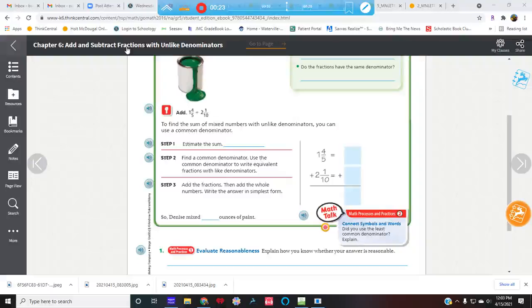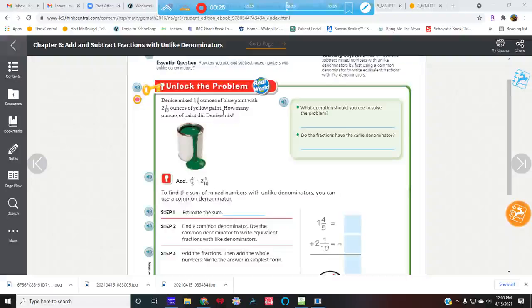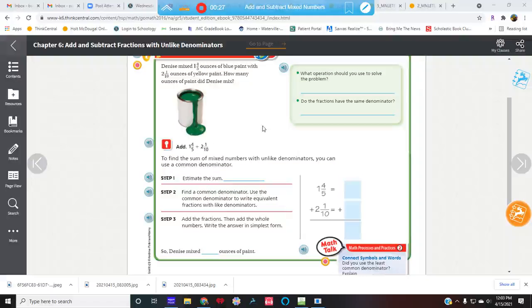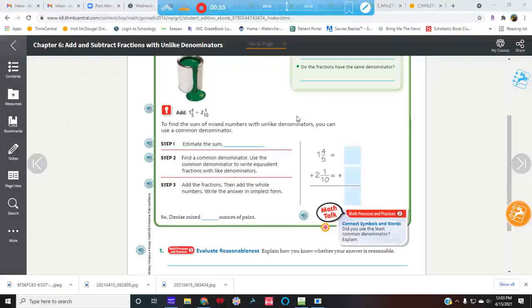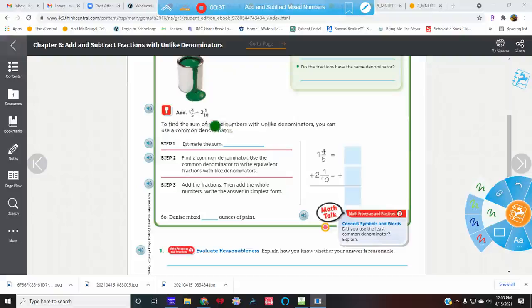So this question tells us that Denise mixes 1 and 4 fifths ounces of blue paint with 2 and 1 tenth ounces of yellow paint. How many ounces of paint does she have? So just one of these ways to help us is to estimate. When I look at this number, 1 and 4 fifths, I have 4 out of 5, so that means it's almost whole. So I'm going to say that that's 2.